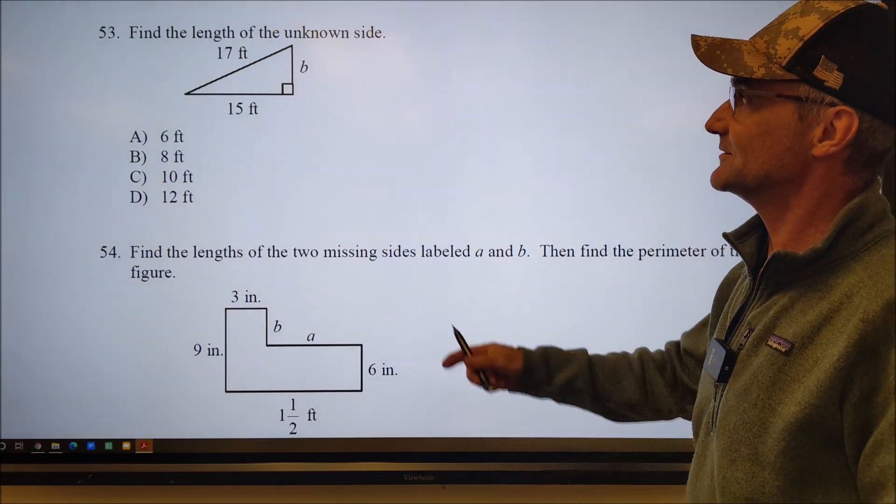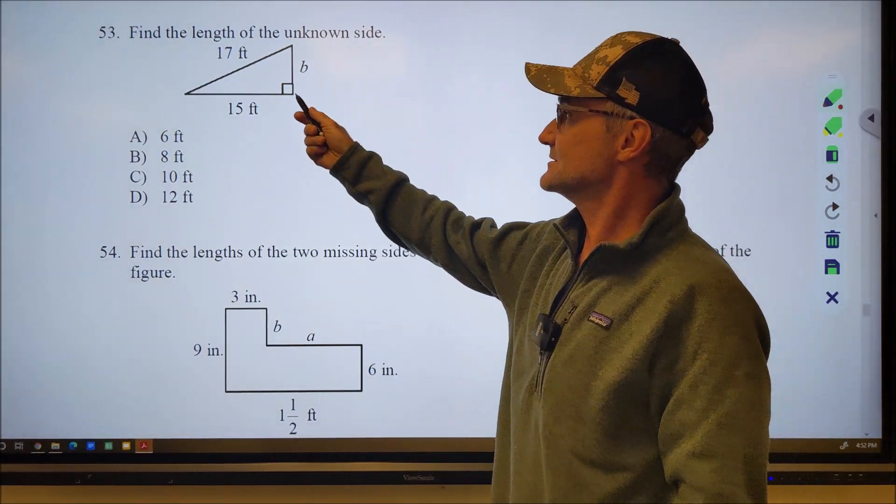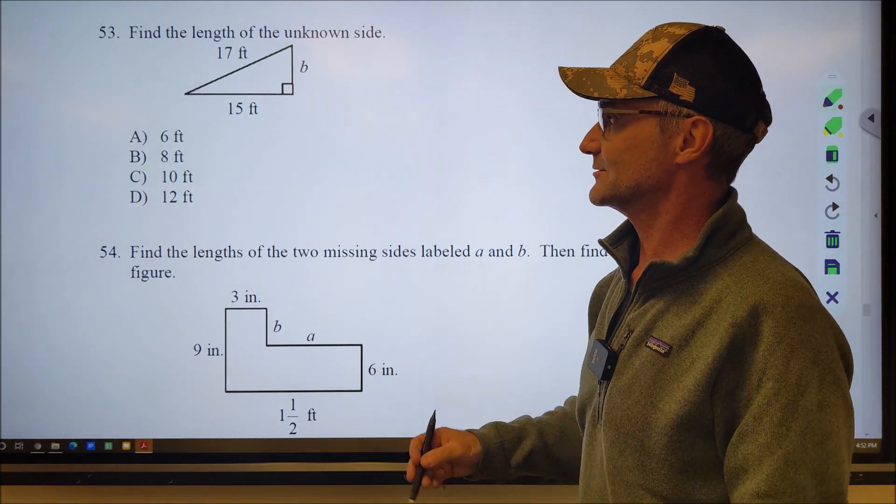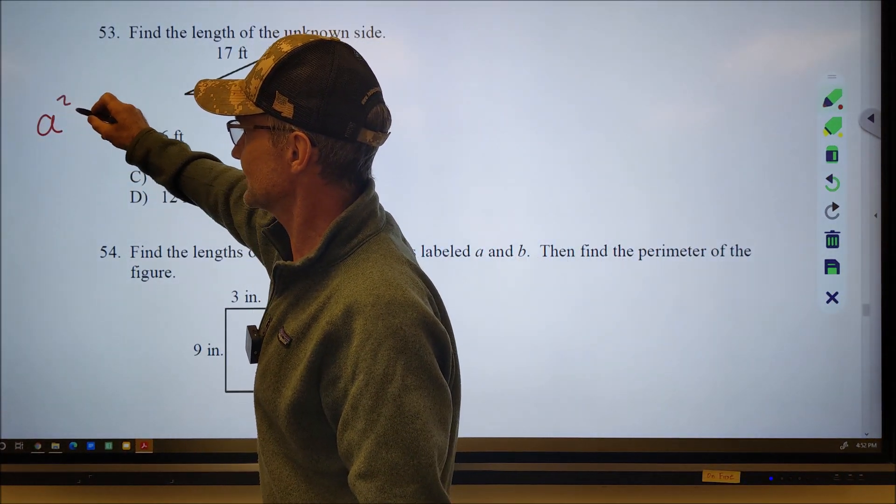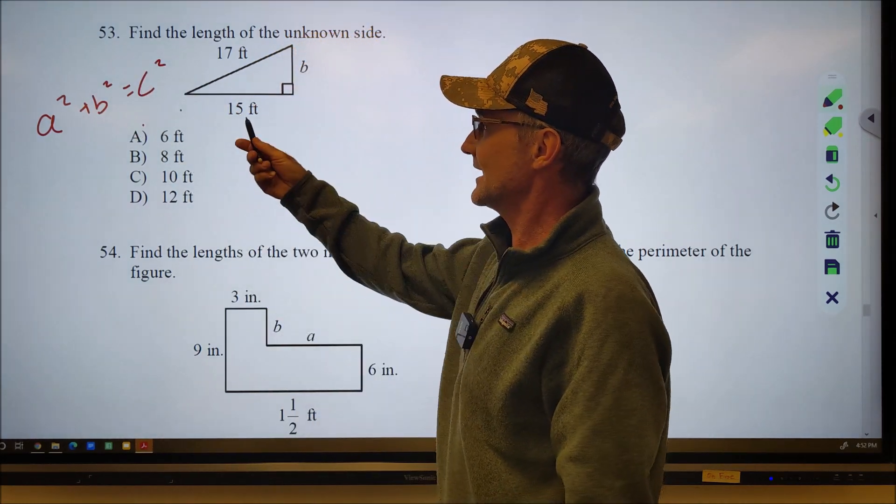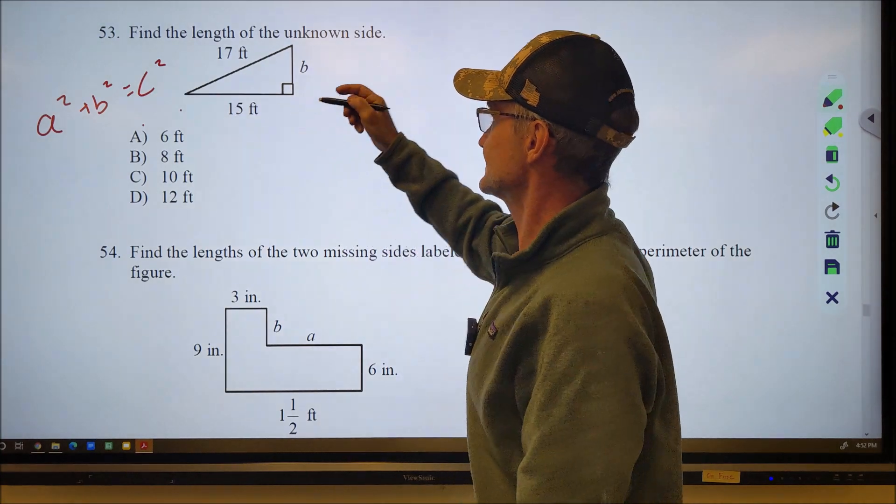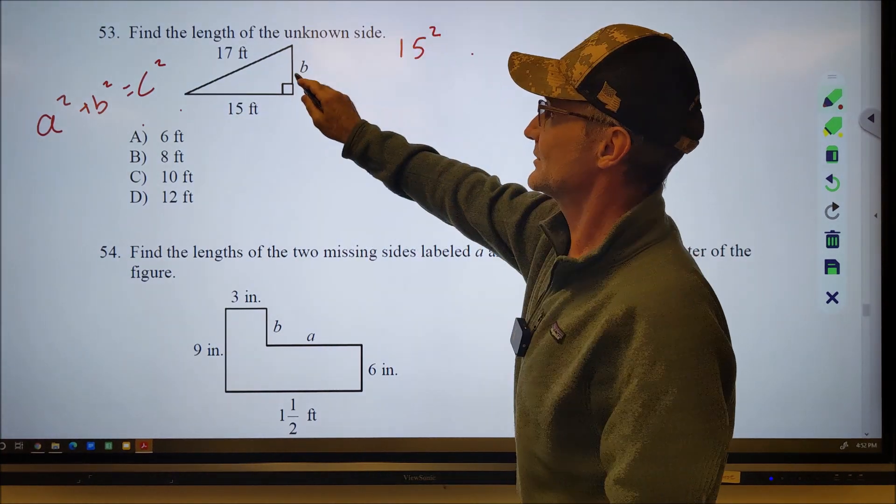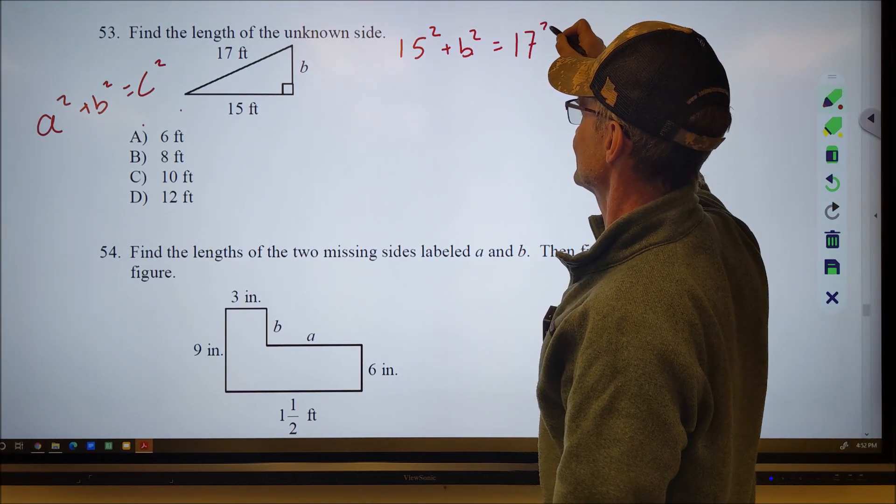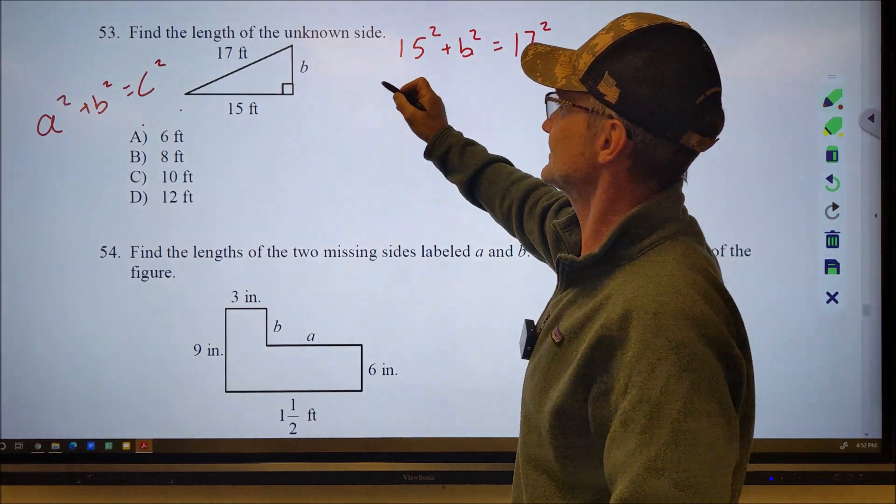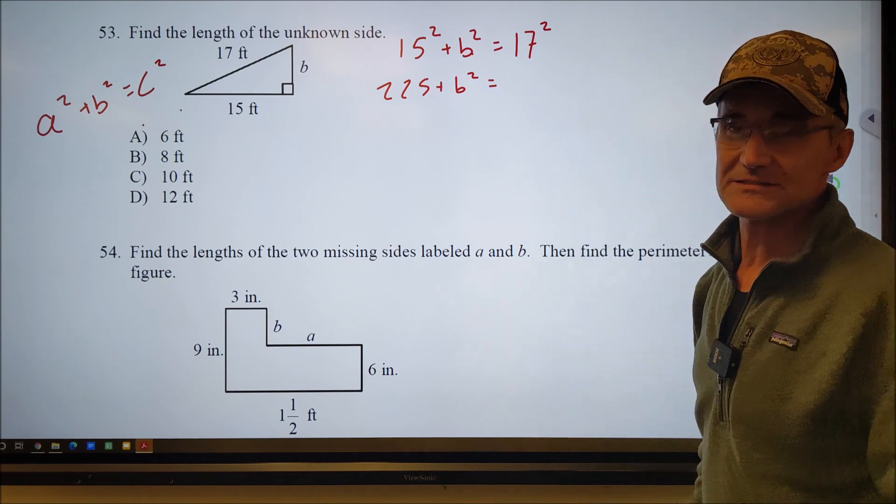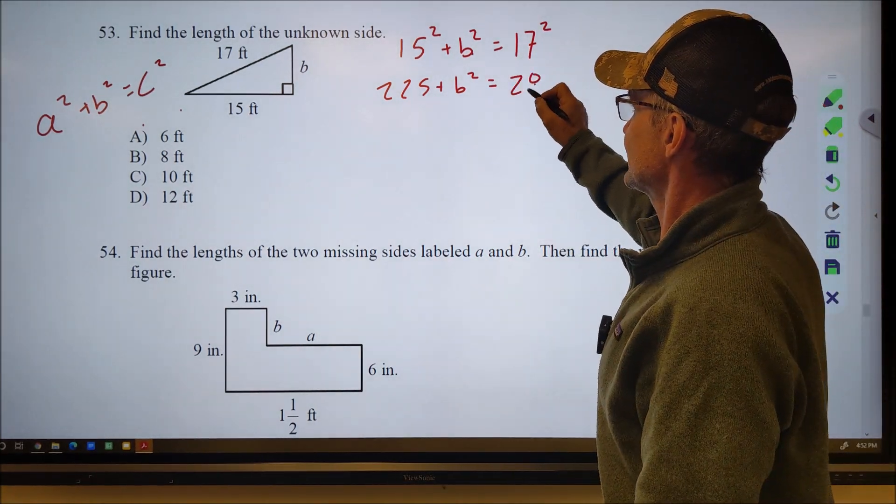Number 53, find the length of the unknown side. First thing you see is that little box in the corner telling you it's a right triangle. So the Pythagorean theorem is going to work. Pythagorean theorem is one leg squared plus the other leg squared equals the hypotenuse squared. So I have one leg in the hypotenuse. So I'm going to have one leg squared plus the other leg squared is equal to the hypotenuse squared.